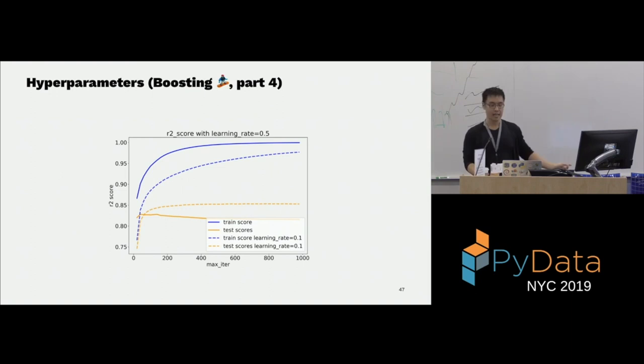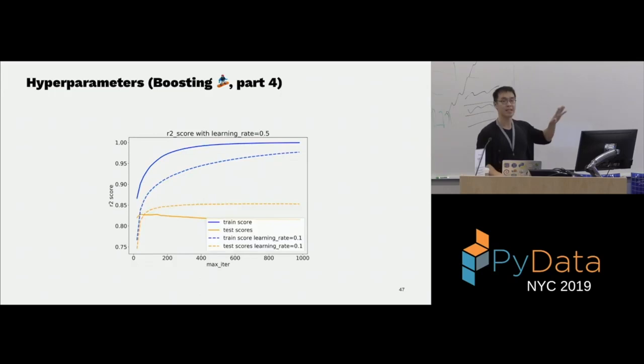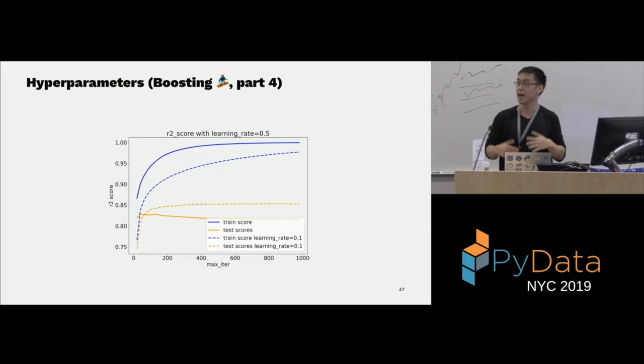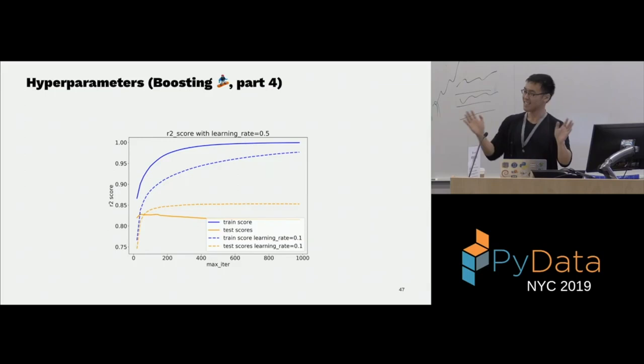There's another hyperparameter called the learning rate. By default it's 0.1. If I set it to 0.5, the solid line shows the new score as it evolves with the number of trees. You see it shoots up, overfits, and the test score goes down. The higher the learning rate, the more your model will overfit.